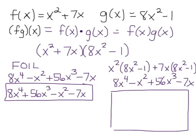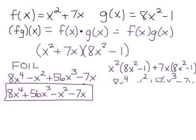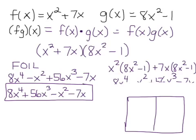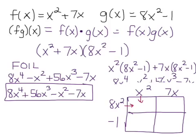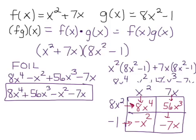Another method is the box method. You draw a box large enough to put both functions on each side: x squared and 7x on one side, 8x squared and negative 1 on the other. Multiply corresponding rows and columns: 8x⁴, negative x², 56x³, negative 7x. All three methods give the same answer — use whichever you understand best. Since this is a polynomial, the domain is negative infinity to positive infinity.